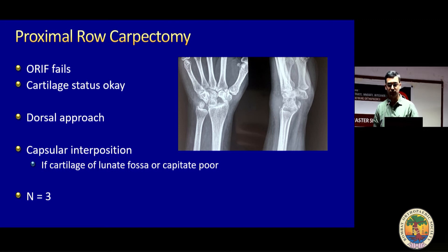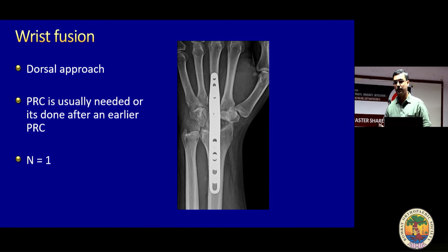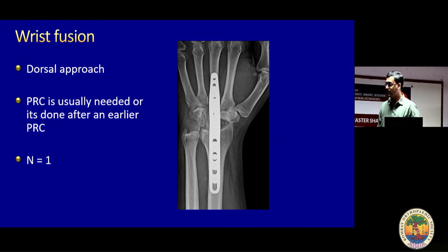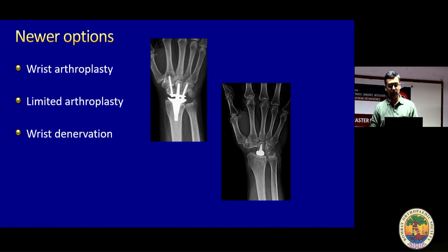I have no experience with capsule interposition, but it is a described procedure. If it's a young patient, you don't want to fuse, and the cartilage is poor, you can use the dorsal capsule — make a flap and interpose it between the capitate and the lunate fossa. I've done just one wrist fusion for this scenario. Wrist fusion is one of the more morbid procedures but gives good pain relief. When I went in, I found everything in poor shape and ended up doing a fusion. Fusion in PLD is different — you need to get all proximal row fragments out and fuse the capitate to the radial fossa.